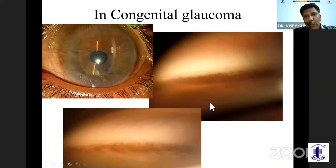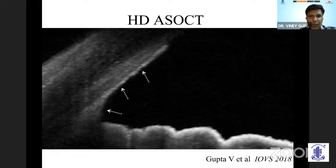On gonioscopy of these kids, you see that the angle has a high iris insertion. In some cases, there is an abnormal tissue that covers the angle — so thick it is almost like a membrane. That's why it needs to be cut in the form of a goniotomy. You can see how thick this iris tissue is; it's almost like a featureless angle. When we did high-definition anterior segment OCT in these eyes, we found a very thick membrane occluding the aqueous outflow.